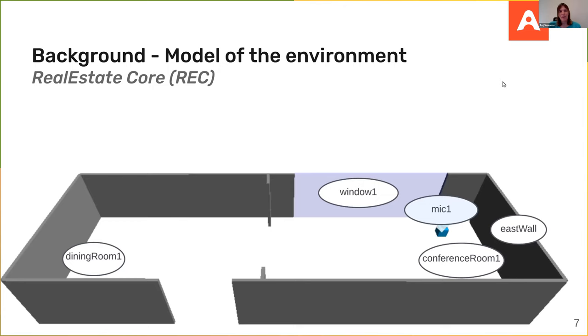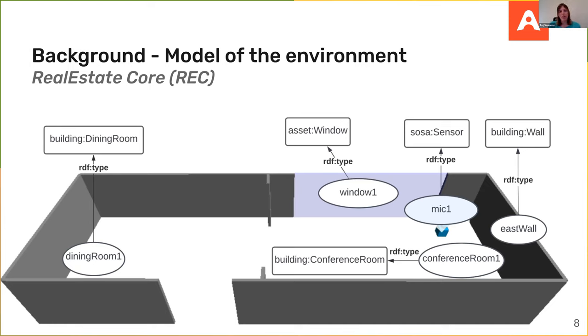Moving on to representing the building or the environment. In this case, we have a simple model of a building. On the left, we've got a dining room. On the right, we've got a conference room and a microphone. But at the moment, these are all just words. They mean nothing to a machine. So what ontologies allow us to do - there's a few for smart buildings, such as W3C Building Topology Ontology or Real Estate Core, which is what I'm using now - we can start to represent what these things represent. So dining room left is a type of dining room. The conference room is a type of conference room, and we might have other conference rooms throughout the building.